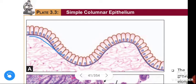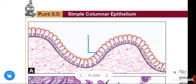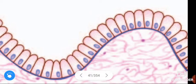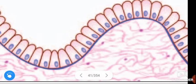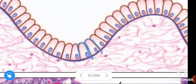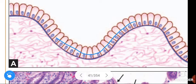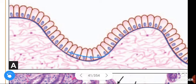See this figure — this represents simple columnar epithelium. If you observe here, the cells are taller when compared to their width; height is more than the width. The nuclei of this simple columnar epithelium are oval shaped. The nucleus is oval shaped and present in the lower half of the cells, and all these nuclei are arranged at the same level when compared to adjacent or neighboring cells.